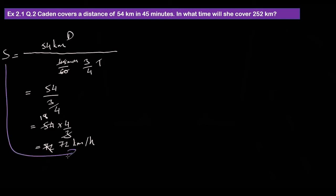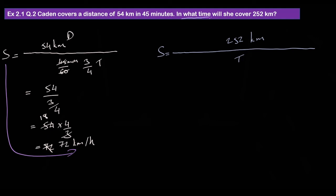Speed — 2 km. We know the time. What time? Speed is 72, distance is 252. Time, time.